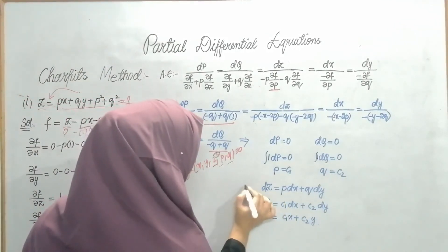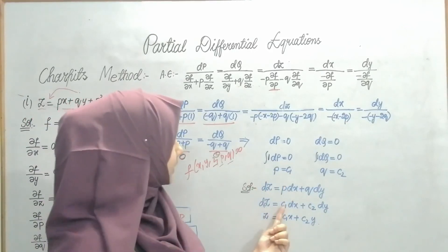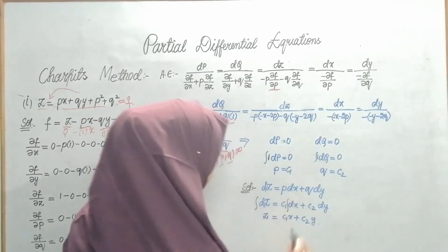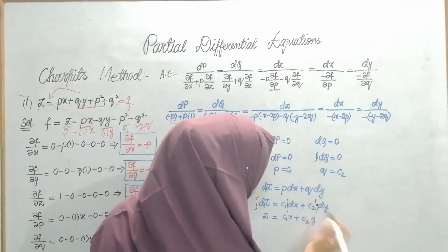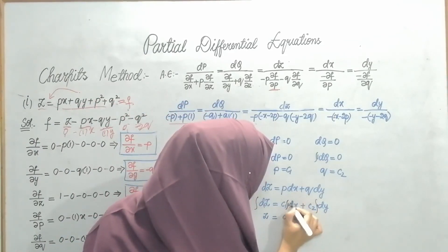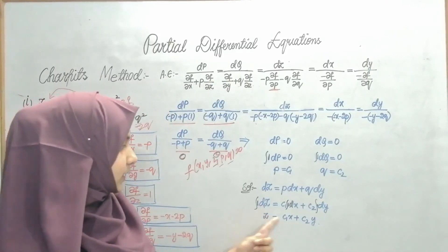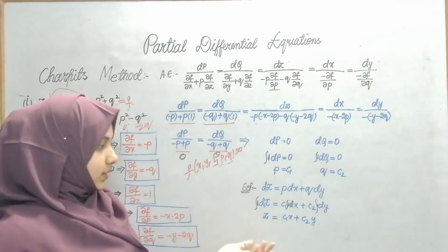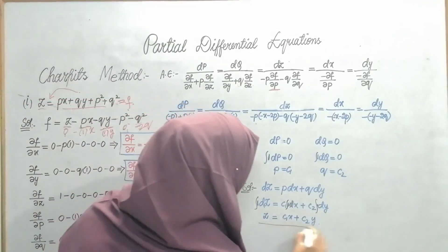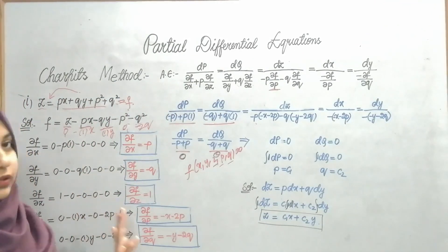Now I substitute p = c₁ and q = c₂ into dz = p dx + q dy, giving dz = c₁ dx + c₂ dy. Integrating both sides: z = c₁x + c₂y + constant. So the final answer is z = c₁x + c₂y. This is how we solve using Chapit's method.